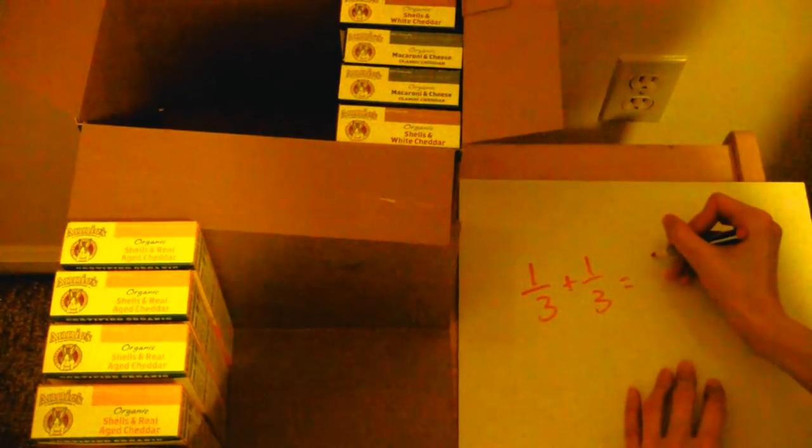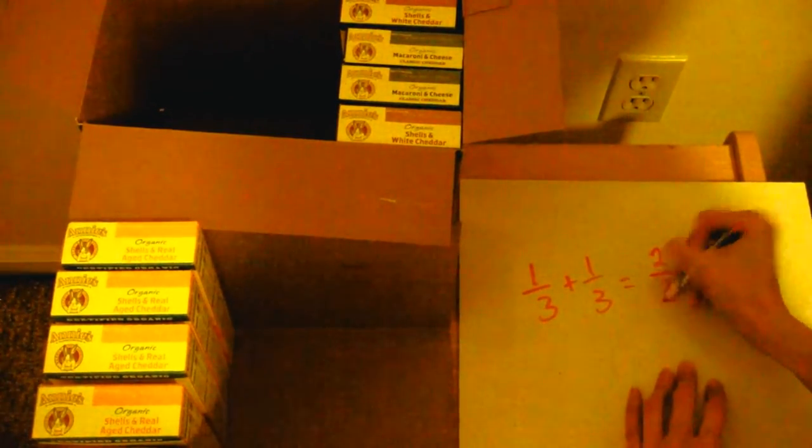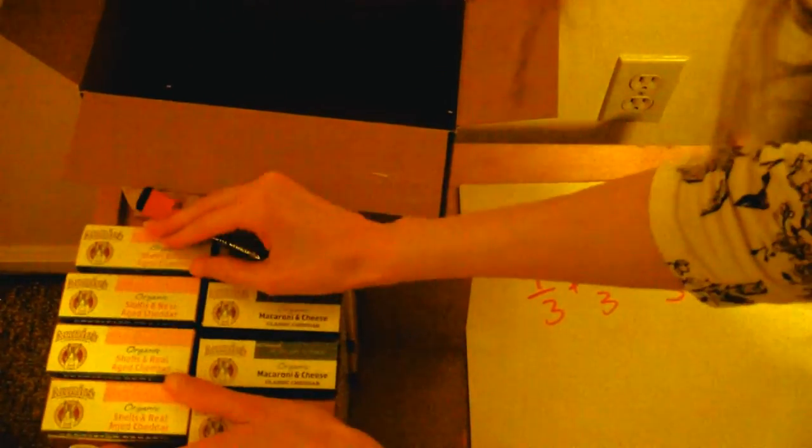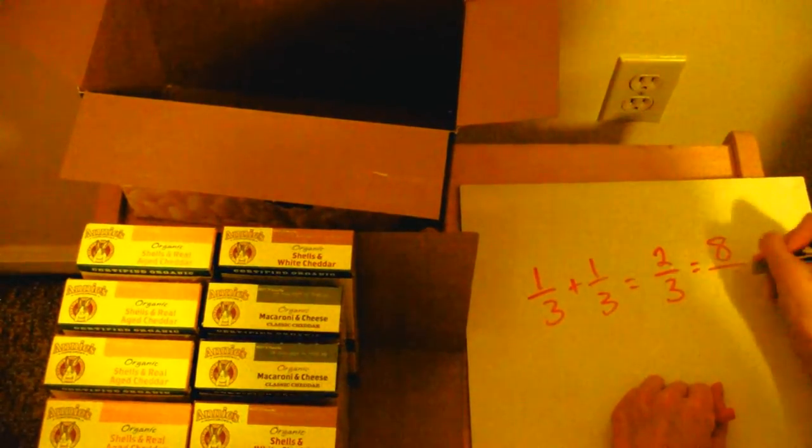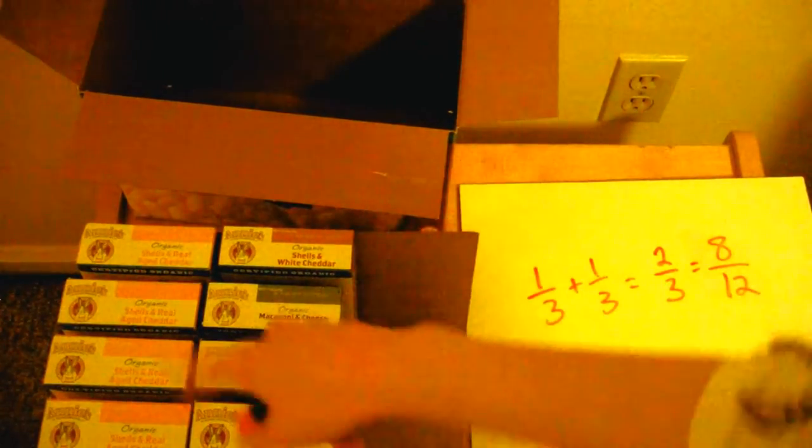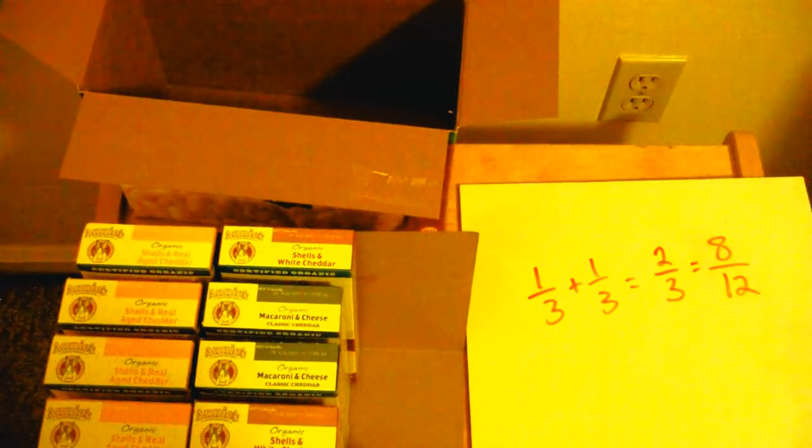I have two thirds. Let's put them together to show that visually. Two thirds. Check that out. You can also see that two thirds is also equivalent to eight twelfths, eight out of twelve boxes. Pretty neat.